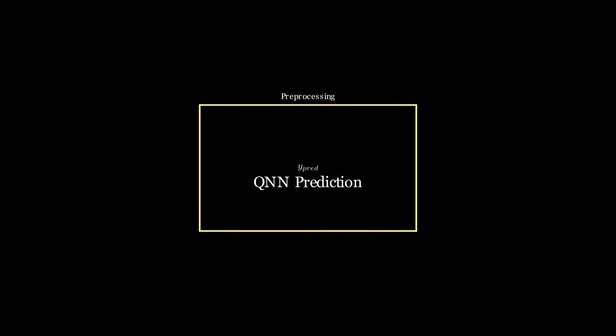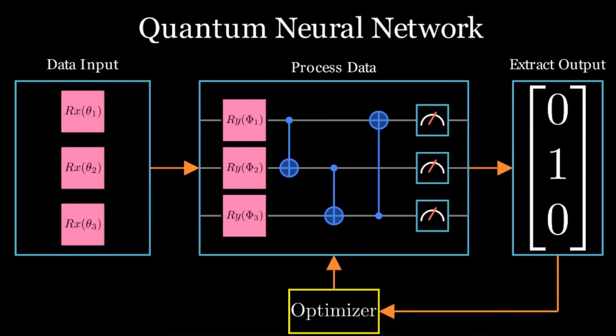This pre-processing stage is completely dependent on the problem at hand. As a final step, the prediction by the quantum neural network is fed to a suitable loss function. A classical optimizer is used that updates the parameters of the rotation blocks in the hidden layers such that the loss function is minimized. I hope by now you have a better understanding of the flow inside the quantum neural network and its various layers.